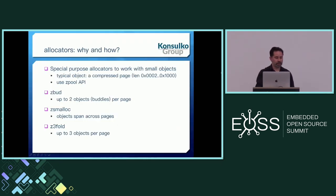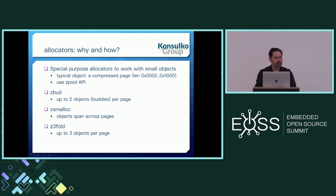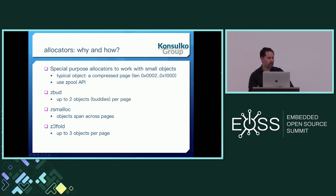Why do we need specific allocators? The normal ordinary kernel allocators target allocations mostly of page size and up. We are, on the contrary, trying to make things as efficient as possible, storing very small chunks of data. Pages that are maybe mostly empty compress well, so a compressed page can be basically from two bytes up to 496 bytes if we take the standard 4K pages. We have a very specific case of objects that we allocate memory for, so we need specific allocators.